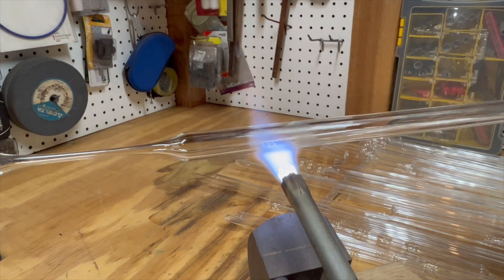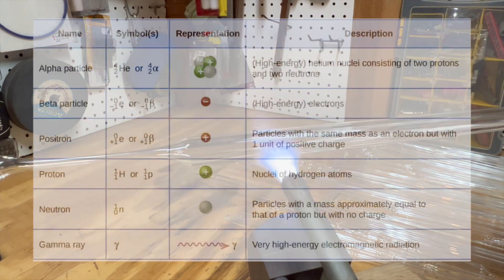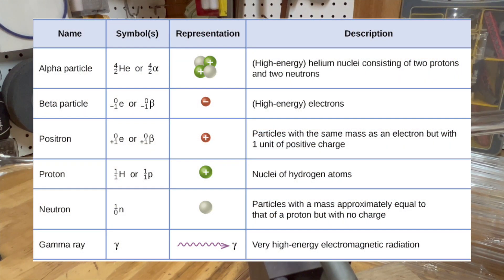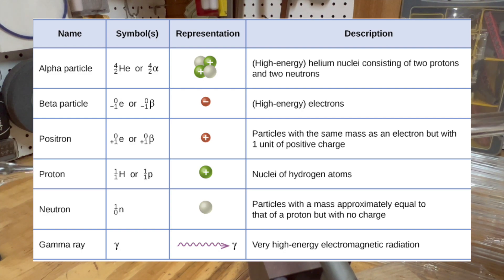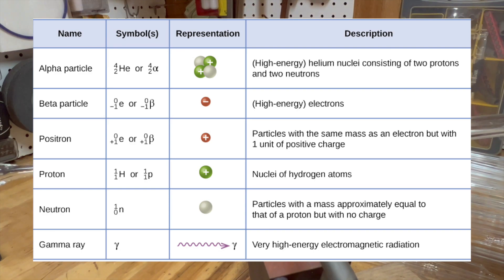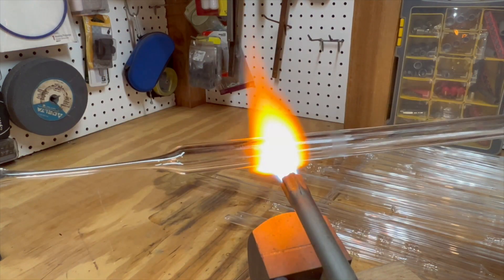Beta decay is a form of ionizing radiation, the type of radiation that is harmful to organisms. Ionizing radiation is not just limited to beta decay — it also includes gamma, alpha, x-ray, and particles with energy over 10 kilovolts.